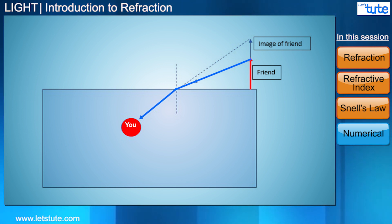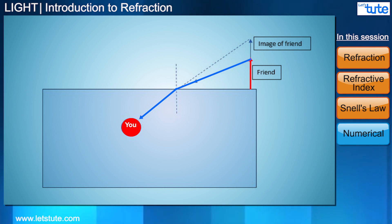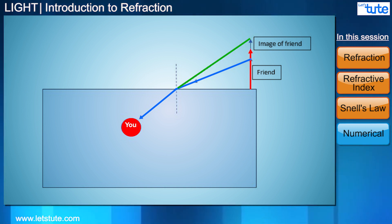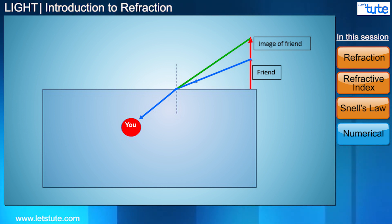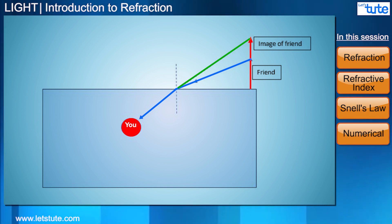Thus the light will bend towards the normal and reach your eyes. So to you it will seem like the light is coming from a higher point, and thus your friend will seem taller than they really are. Now you know something that you didn't know before. To completely understand what we have learned today, let's look at this problem.